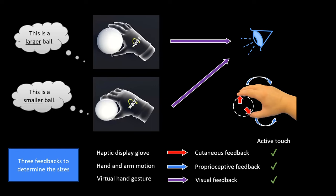Active touch provides all three, but passive touch lacks proprioceptive feedback. Can users still accurately assess size without it?